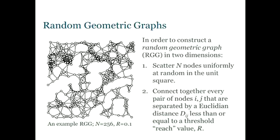The canonical spatial network is the random geometric graph. It's extremely simple. We scatter some nodes at random in a space, and we connect every pair of nodes that is close enough together. So there's some kind of threshold of distance, R, the reach of each node, and every legal edge is there in the random geometric graph.